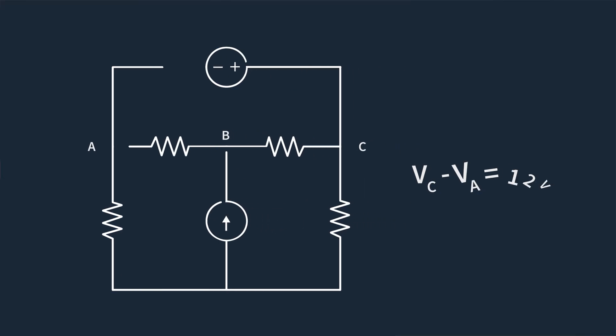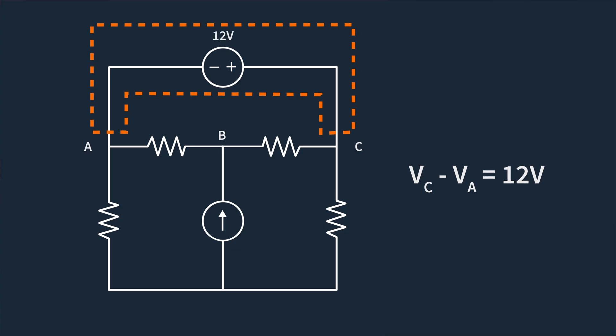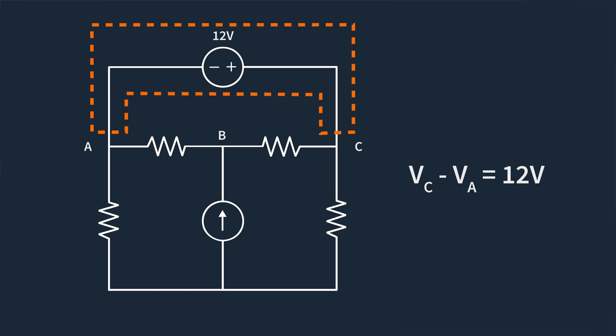Even though the voltage source is part of the supernode, we still treat it as a separate equation that tells us the voltage difference between the two nodes. We know that VC minus VA equals 12 volts, so it's important to get that equation written out. You can create equations for the rest of the nodes using our basic KCL approach and then start solving the equations just like any other nodal analysis.